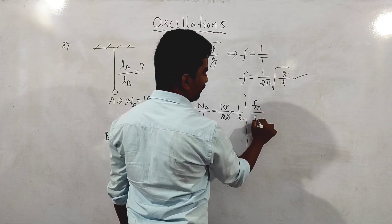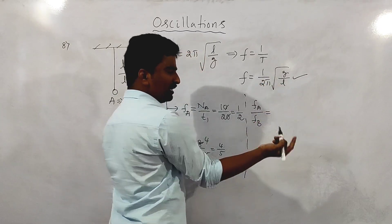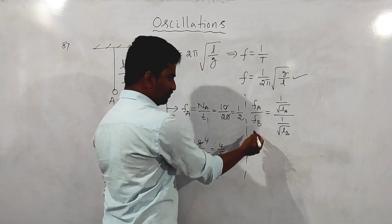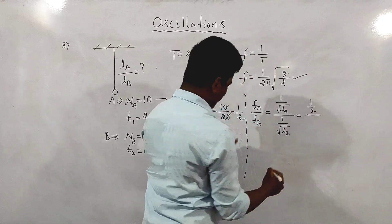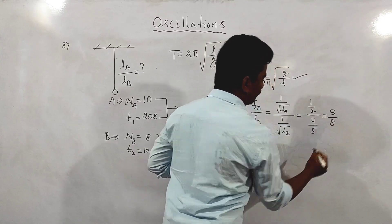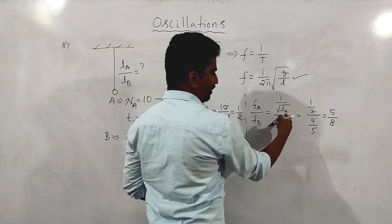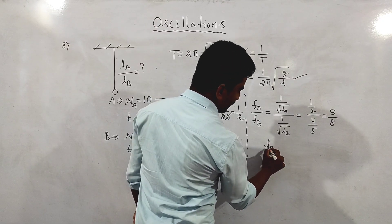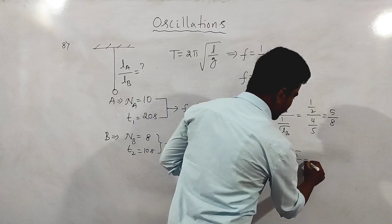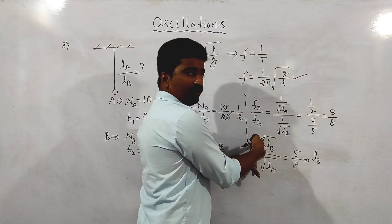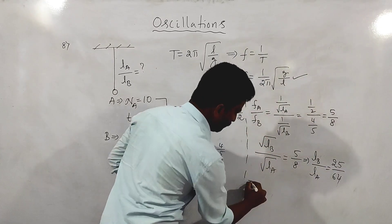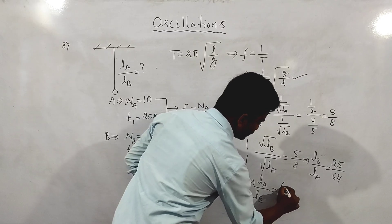Frequency of A divided by frequency of B: since the constants 1 over 2 pi and G cancel, we get the square root of LB divided by square root of LA equals frequency A over frequency B equals (1/2) divided by (4/5) equals 5/8. Squaring both sides: LB divided by LA equals 25 divided by 64. Therefore length of A to length of B equals 64 divided by 25.